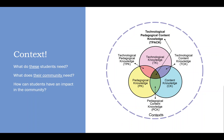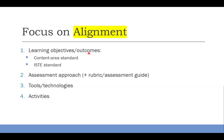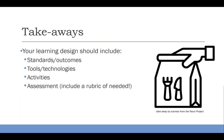Alright. So ultimately, what I want you to focus on is aligning these things: aligning the learning objectives, your assessment approach, the tools and technologies and activities, including the rubric. And I think going through this process of thinking through these ideas can help you be more effective with your technology use. Main takeaways: your learning design should include standards or outcomes, tools and technologies, activities and assessment, including a rubric or other type of grading guide if needed. Thanks.